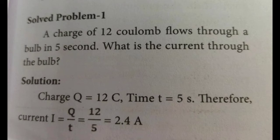SI unit of electric current. The SI unit of electric current is ampere, A. The current flowing through a conductor is said to be 1 ampere when a charge of 1 coulomb flows across any cross-section of a conductor in 1 second. Hence, 1 ampere is equal to 1 coulomb per 1 second.